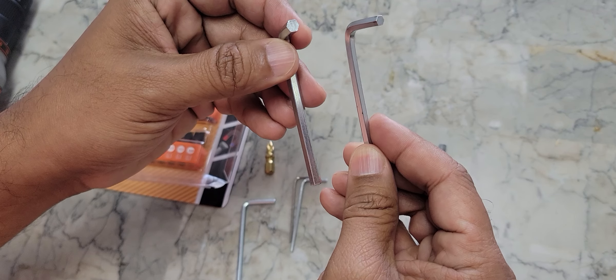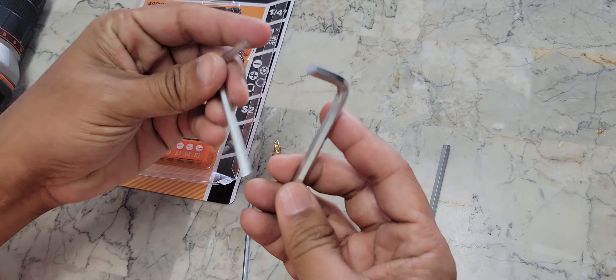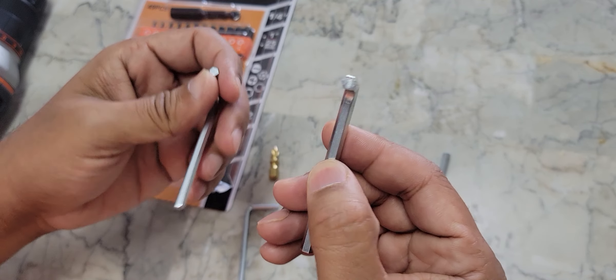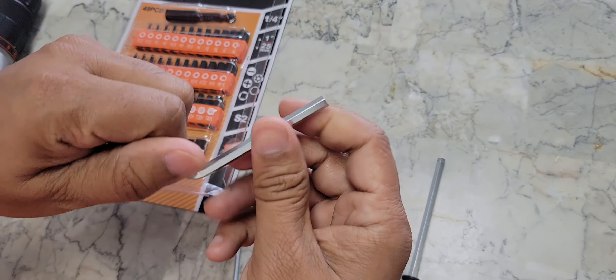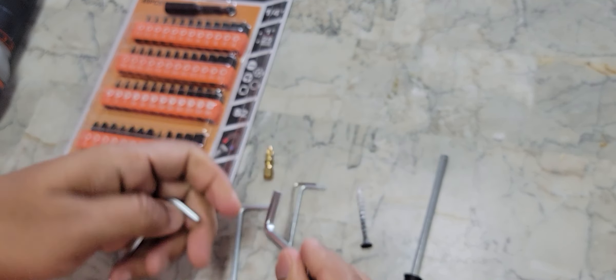These are called hex keys and they come in different sizes. I mean, they do the job, but they're a little more difficult to use, especially if you have to spin it around several times or if you have to put any type of force on it.